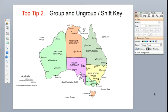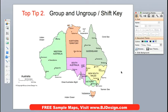The second element today that we're going to talk about in our favorite tips is using group and ungroup, and this is done in combination with the shift key. Grouping and ungrouping really helps you deal with all the little elements in a map. Sometimes there's a lot of pieces in here.